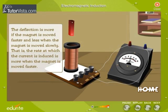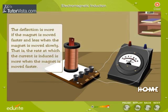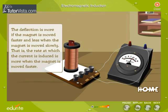The deflection is more when the magnet is moved faster and less when the magnet is moved slowly. That is, the rate at which the current is induced is more when the magnet is moved faster.